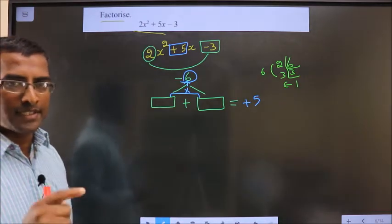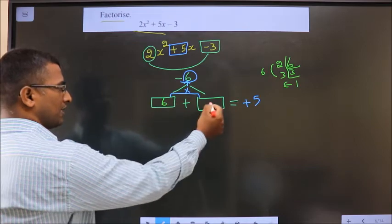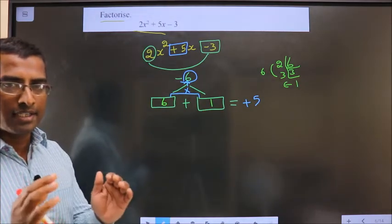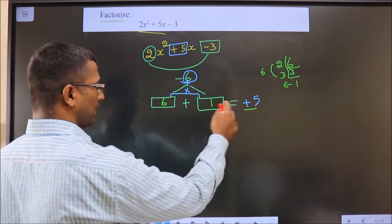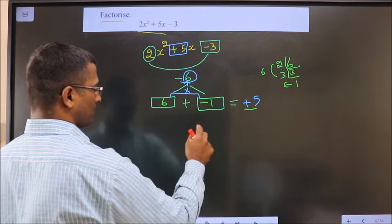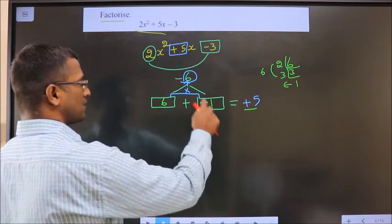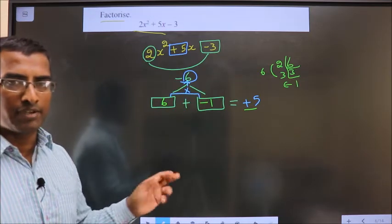2 into 3 is 6 and this is the second number. So, 6 into 1 is 6. 6 minus 1 is 5. So, the numbers are 6 and 1. Now, adjust the signs. To get here plus 5, that could only happen if I place negative here. 6 minus 1 is plus 5 and 6 into minus 1 is minus 6. So, we have found the 2 numbers satisfying the condition.